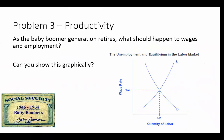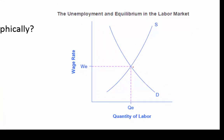Problem 3: as the baby boomer generation retires, what should happen to wages and employment? Before they retired, this is our equilibrium. After they retire, the supply of labor is going to shift to the left — it's going to decrease. Not as many people are working; the baby boomers are going out and there aren't as many people to fill their spots. This is our new supply curve S1 (original was S0). What happens to wages?